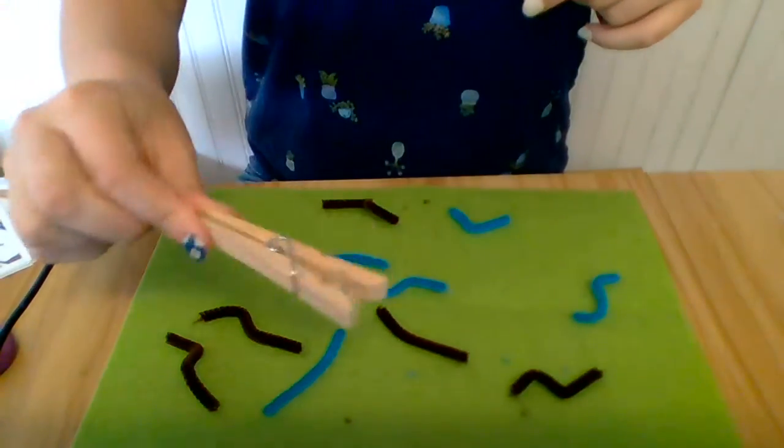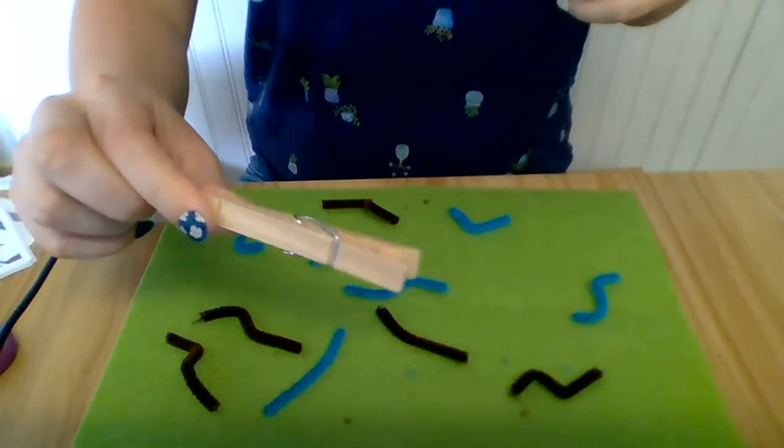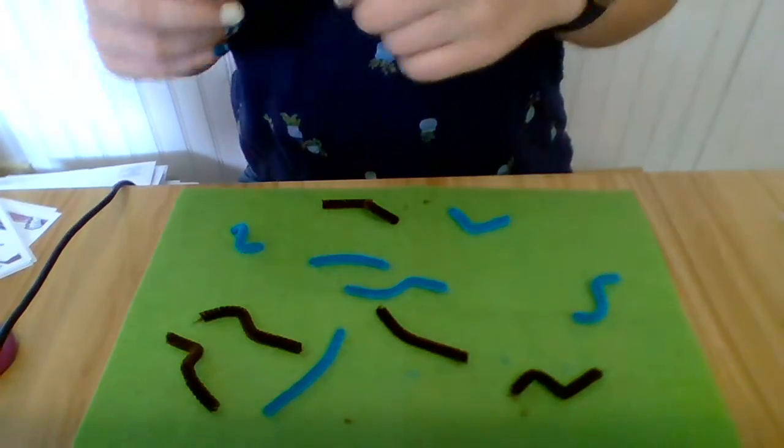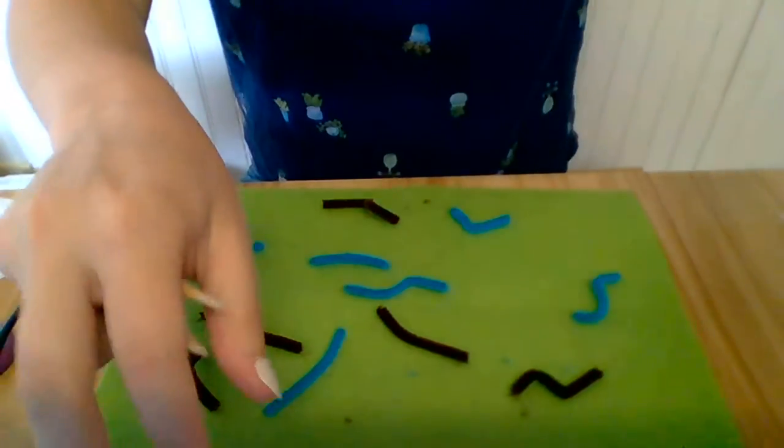Now you're going to get out this clothespin. Birds have beaks, right? And that's what they use to find their worms and eat them. So we're going to pretend that this clothespin is our beak. It's going to open and close and catch a worm.